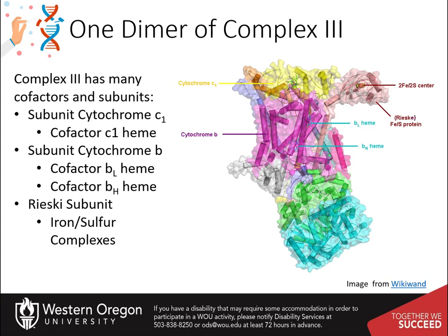There are also two binding sites for coenzyme Q that will be discussed in more detail over the next few slides. Structural analysis has also uncovered many complex details, such as unusual motion of the Reiske subunit holding the iron-sulfur cluster, and scientists are still working out how the entire process occurs without short-circuiting the cycle.